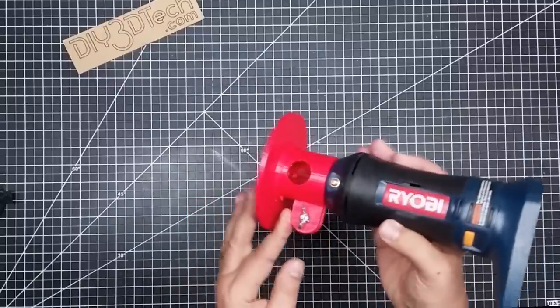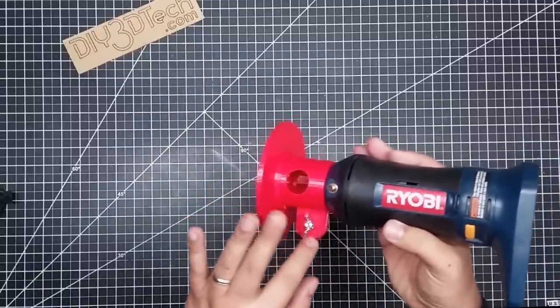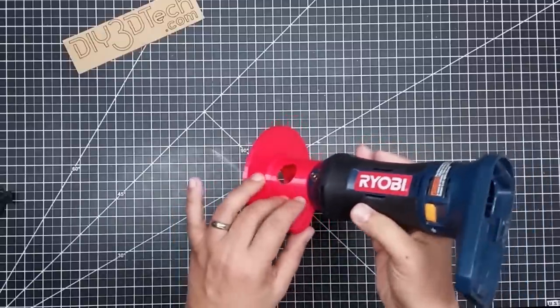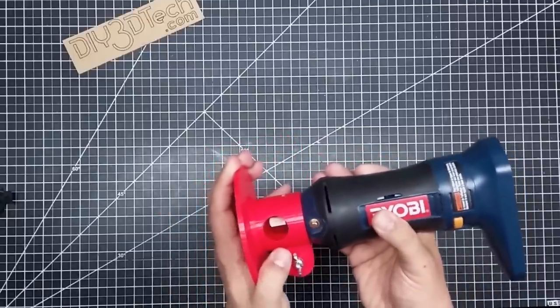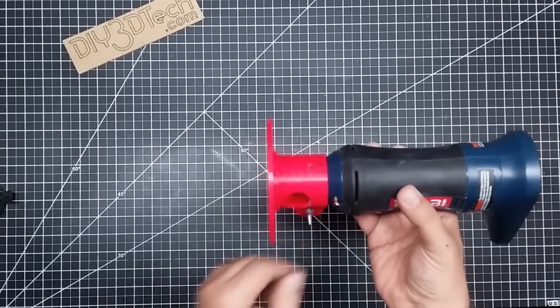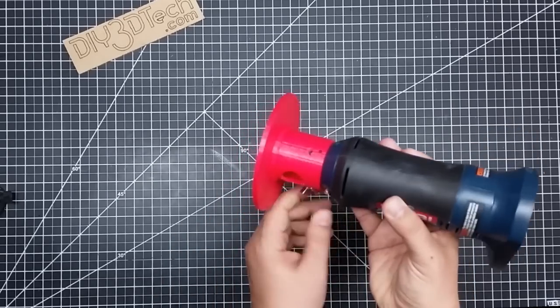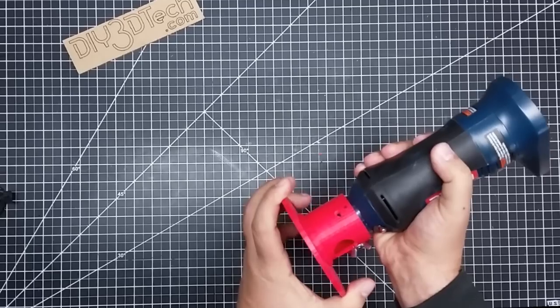Then I added a cinch tab here with a 1/4-20 bolt. Now, there is a little bit of movement in this, so I may come up with some changes for that.